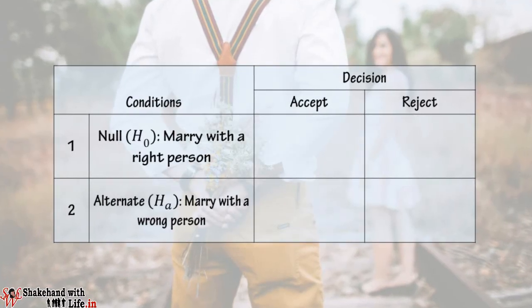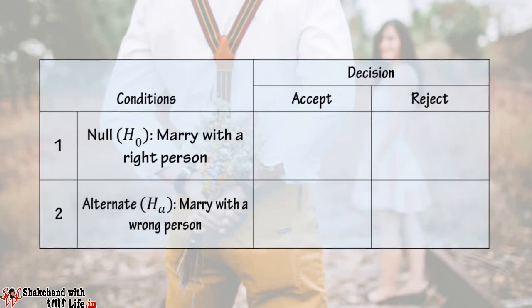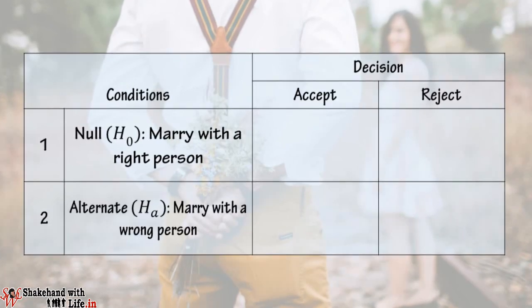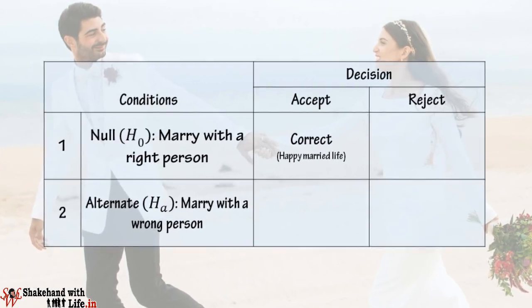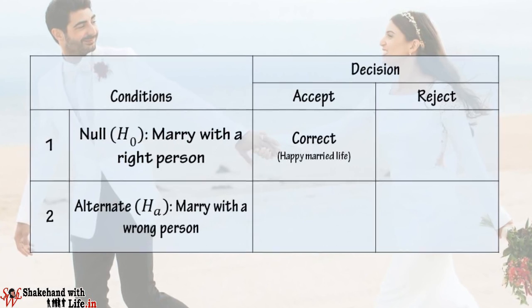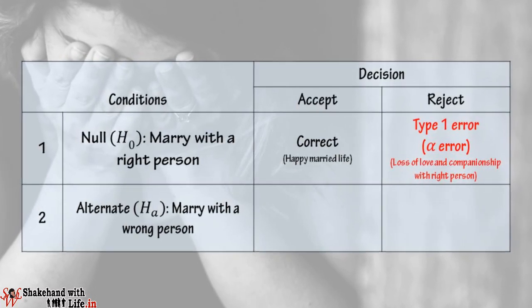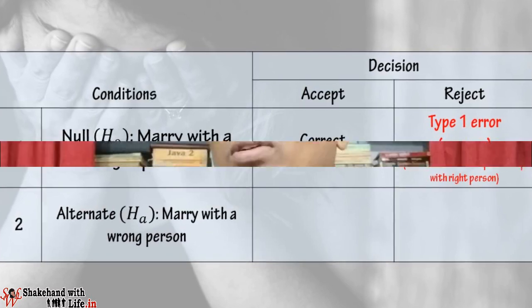Now let's understand with a simple example — taking a decision of marriage. Everybody wants to marry with a right person. So here, to marry with a right person is the null hypothesis H0, and to marry with a wrong person is the alternative hypothesis HA. In the first condition, if someone accepted to marry with a right person, then he or she will lead a happy married life — a correct decision. But if someone rejected to marry with a right person, then he or she is making a Type 1 error or alpha error, which means loss of love and companionship with the right person.